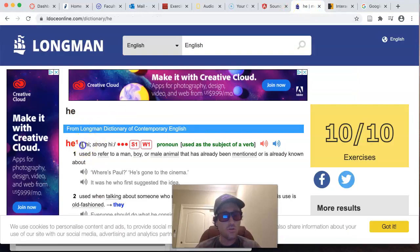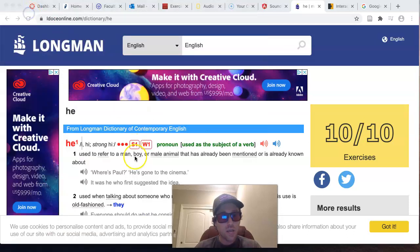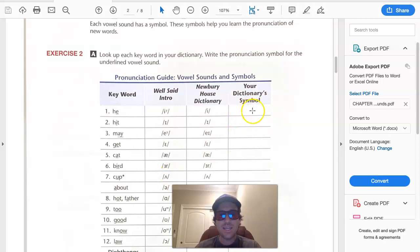So all you need to do, copy it. And then you can put it in a word document. Or if you prefer, you can even write out your responses in your textbook or in your notebook. It's up to you. But the E you can see is the same as the Newberry House dictionary. So you would write the E that we saw there in the dictionary. Copy and paste, or you can write it out.